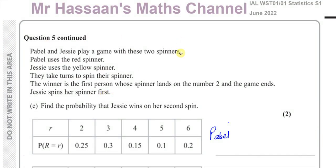That concludes question number 5 from the S1 June 2022 International A-level exam. Other questions from this paper can be found in the playlist linked here. You can also find related questions on discrete random variables via the other link, and subscribe to the channel. Thank you for watching and see you soon.